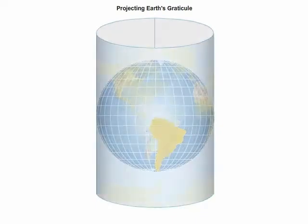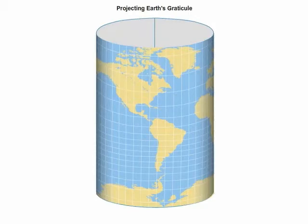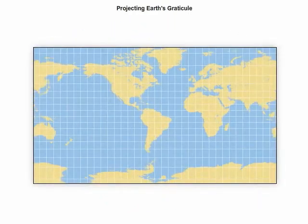In this case, a cylinder is used, and as it is unrolled, it reveals a map projection.